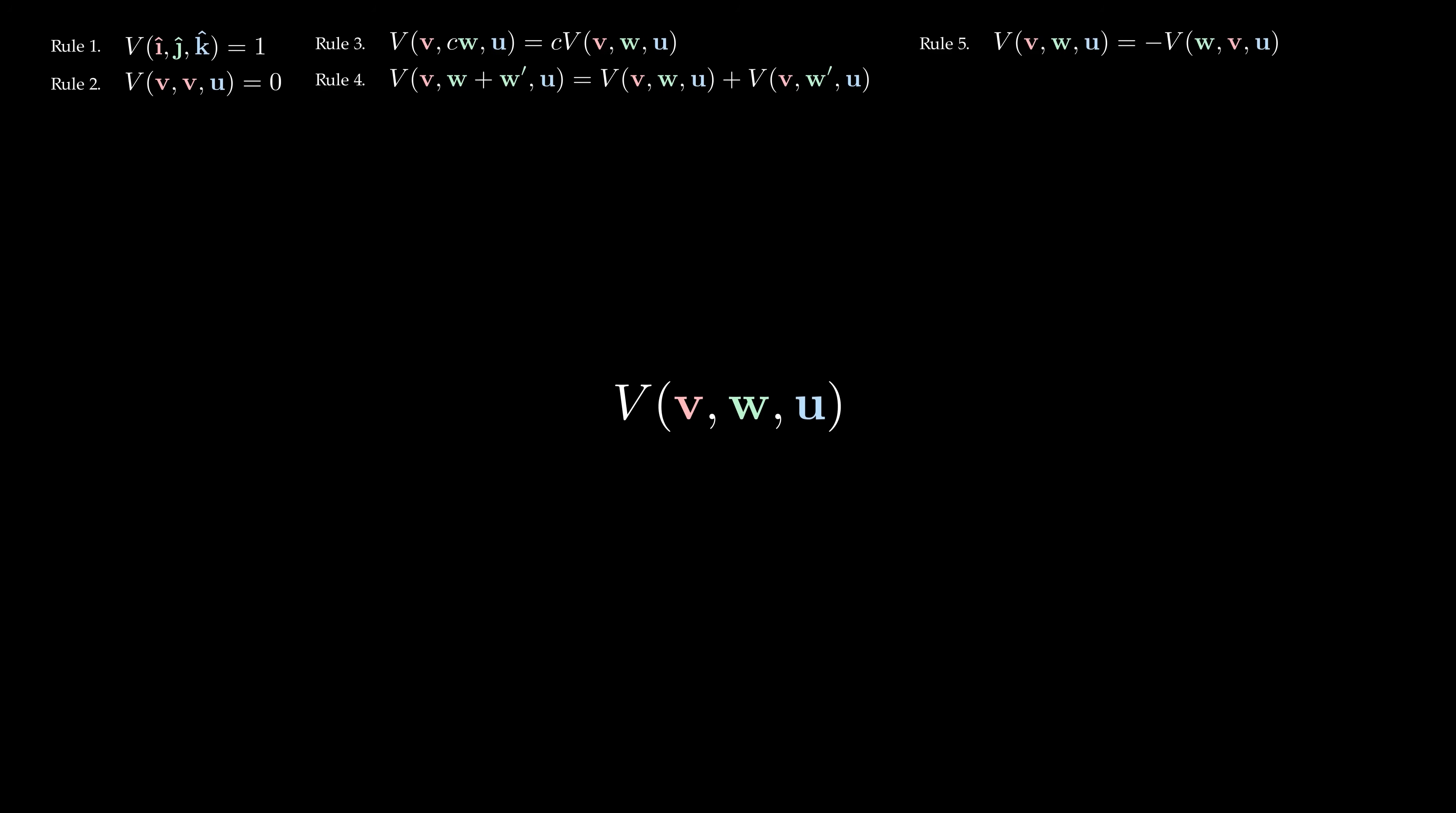And now, we're ready to calculate the volume of a general parallelepiped. But first, I'll rewrite v, w and u as v1, v2 and v3, since this will let us see the patterns more clearly later on. We can then expand the vectors in coordinates just as before, and then we can apply rule 4 to split the sum...